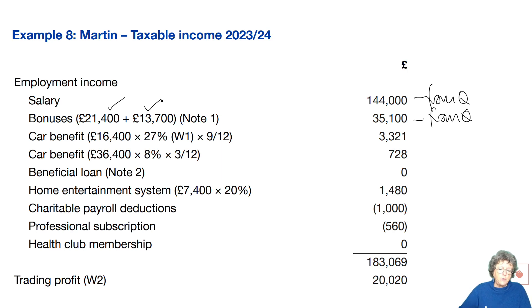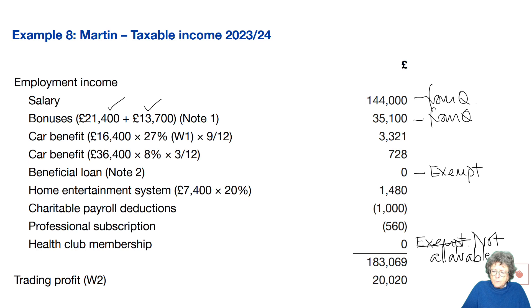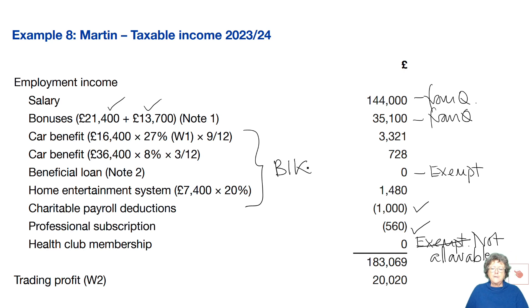Two cars are in the workings. The loan below £10,000 was exempt. The health club membership was also exempt. Professional subscriptions — not allowed because he used the club for private purposes as well. These two other expenses were allowed. It's basically the benefit in kind calculations in the middle where you have to do the work. If you copied the salary, the bonuses, and the charity — that's already two and a half marks just for copying the question into the answer.